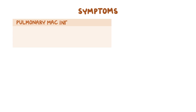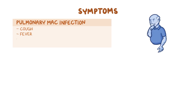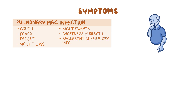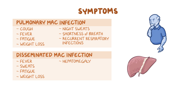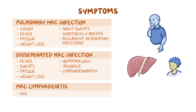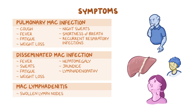Symptoms of pulmonary MAC infections include cough, fever, fatigue, weight loss, night sweats, shortness of breath, and recurrent respiratory infections. With disseminated MAC infections, there may be non-specific symptoms such as fever, sweats, fatigue, and weight loss. On a physical exam, there can be hepatomegaly, or an enlarged liver, jaundice, or yellow pigmentation of the skin and mucous membranes, and lymphadenopathy, which means swollen lymph nodes. Finally, with MAC lymphadenitis, there are usually swollen lymph nodes mainly on one side of the neck.